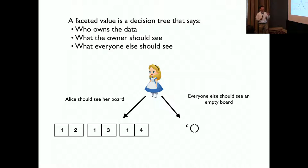To perform faceted execution, we first need a facet value, which is a decision tree that says who owns the data, what the owners should see, which is private data or in this case Alice's data, and what everyone else should see, in this case non-Alice data, which is public data.